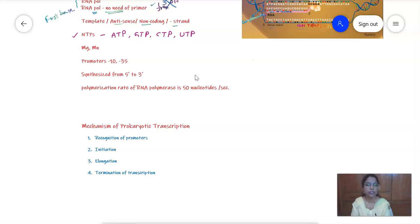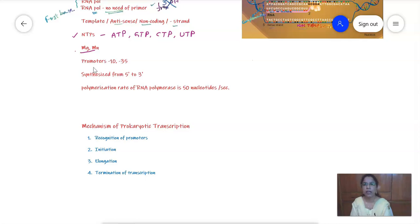In prokaryotes, there is no preformed nucleus, so transcription takes place in the cytoplasm. The process also requires magnesium ions and manganese ions — specifically, bivalent metal ions are needed.